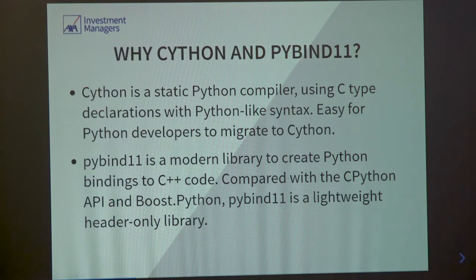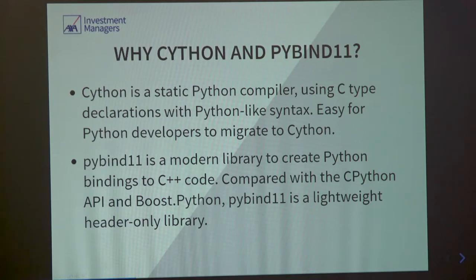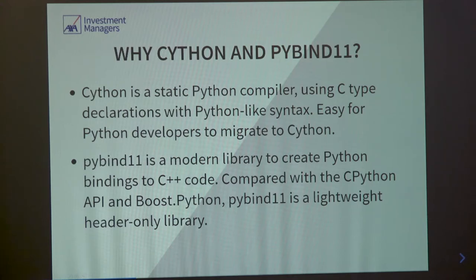Why compare Cython and PyBind11? They're in two different roles. Cython is a static Python compiler — you write syntax-like Python, but you can compile it to C extensions. Even if you just change your .py files to .pyx and compile, you already gain 10% to 30% performance. No pain point for Python developers. PyBind11 is another role — you have C or C++ source code you'd like to bind with CPython API. Compared to Boost.Python, PyBind11 is a header-only library, so you don't need to import unnecessary libraries.